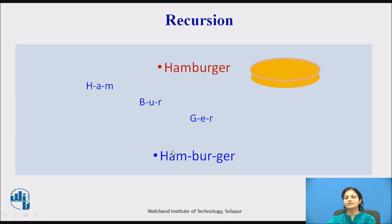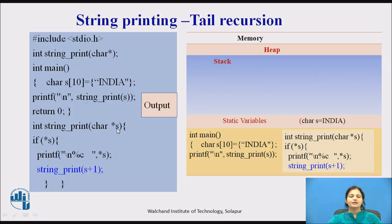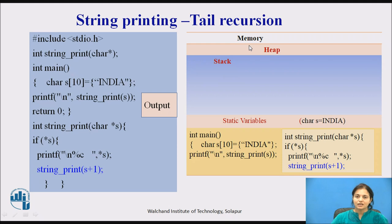The recursive answer for this is: 'ham,' then recursive answer 'bur,' and then 'G-E-R.' Again we collect all and call 'ham-bur-ger.' This is a small example of recursion. Now we will take one example in a C program where we are printing a string using tail recursion. What is tail recursion? When your recursion step is at the end, it is called tail recursion.